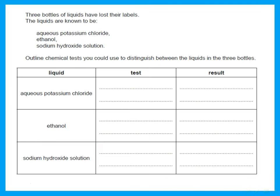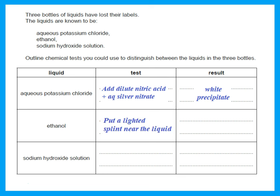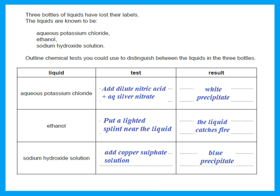If three bottles of liquid have lost their labels and you need to distinguish between them: for potassium chloride, add dilute nitric acid and aqueous silver nitrate — you should get a white precipitate. For ethanol, put a lighted splint near the liquid — the liquid catches fire. For sodium hydroxide solution, you can use copper(II) sulfate to test it — add copper sulfate to the sodium hydroxide; it should give a blue precipitate.